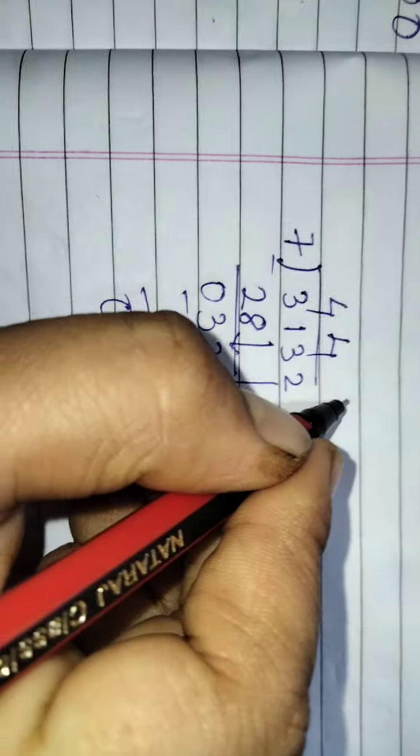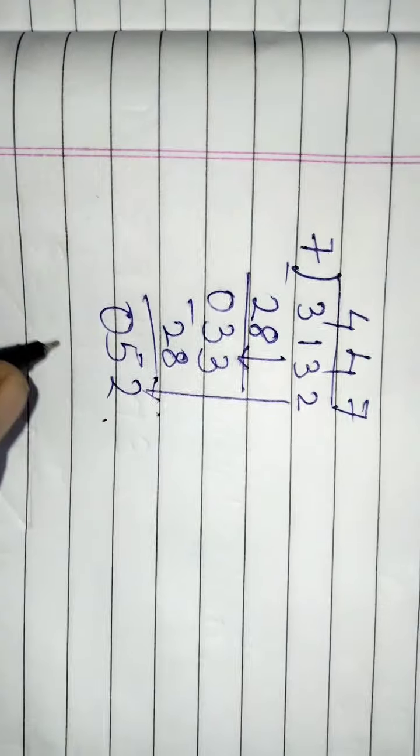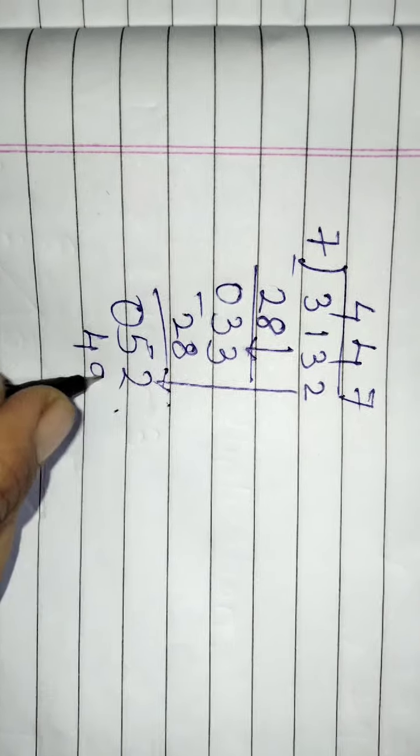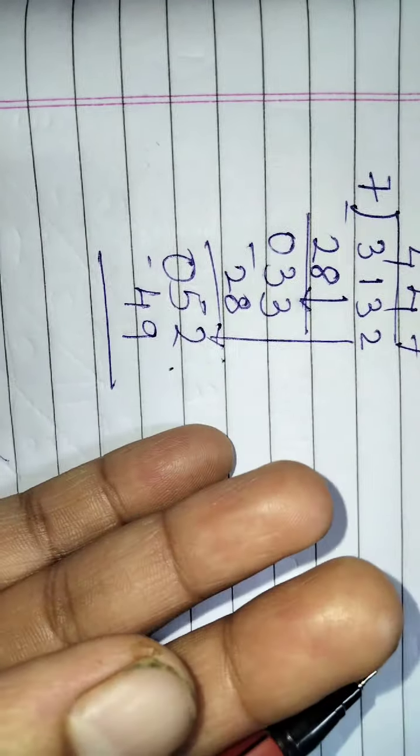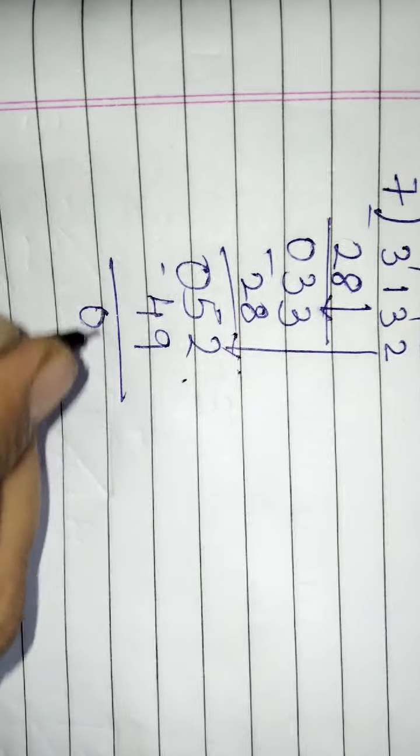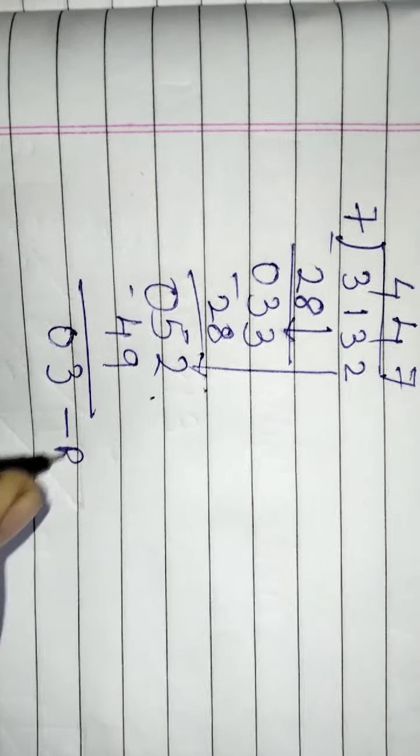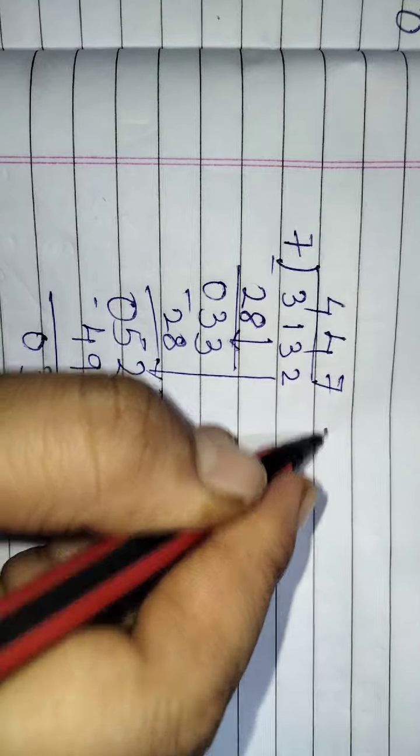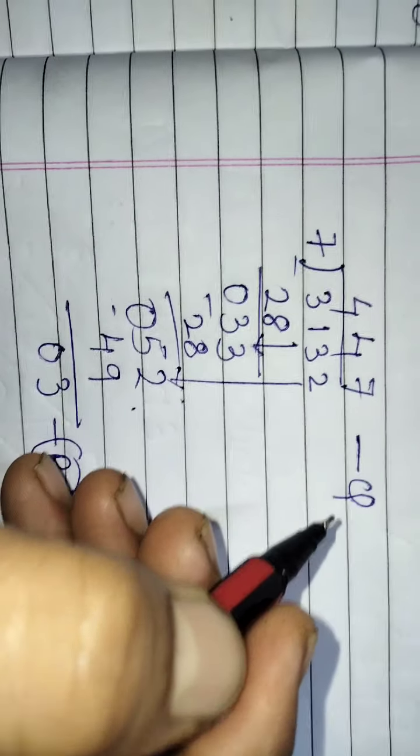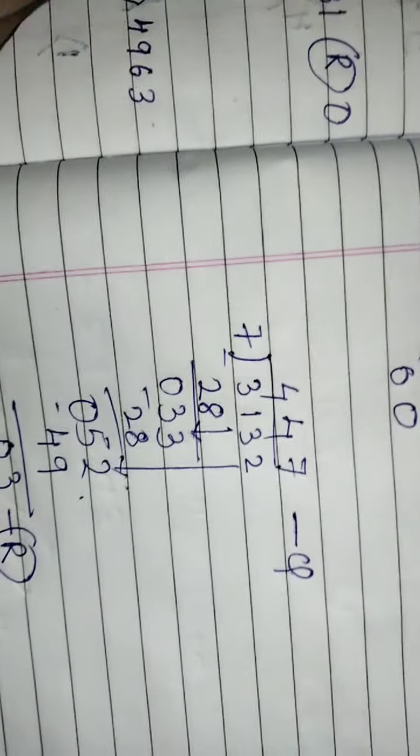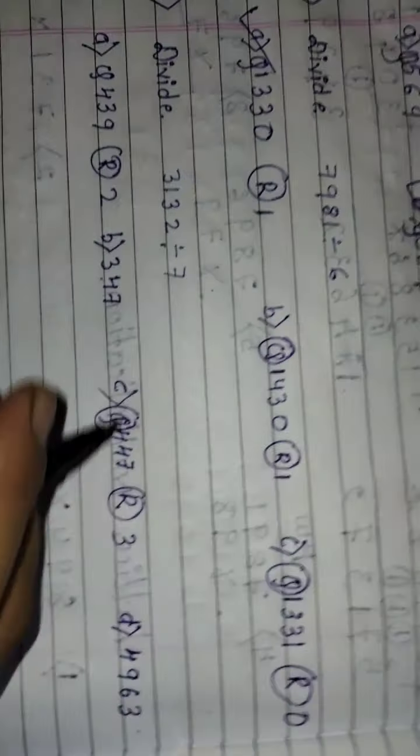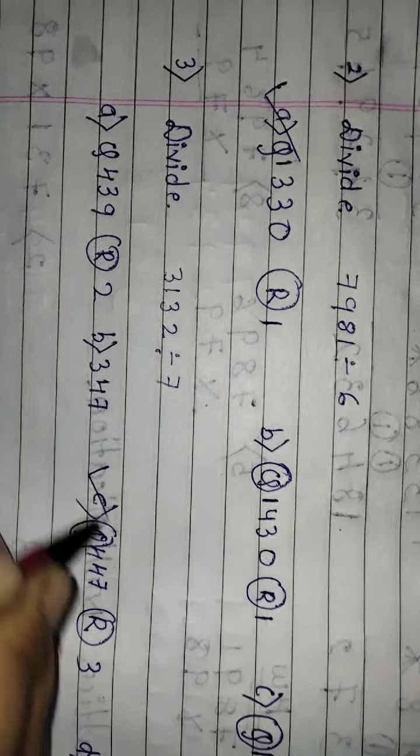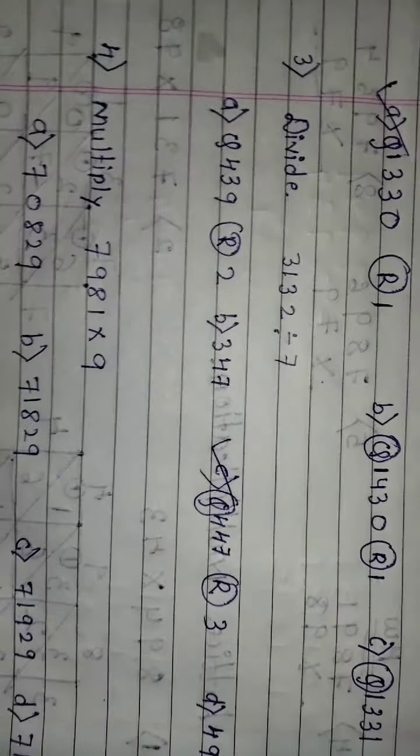7 7's are 49, then 50, 51, 52. So quotient will be 447, remainder will be 3. Then you can see here quotient 447, remainder 3.